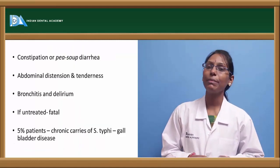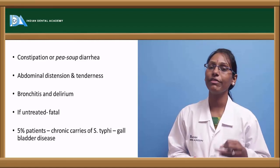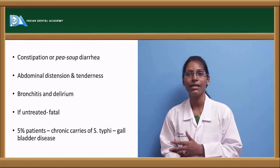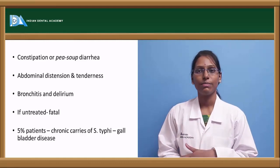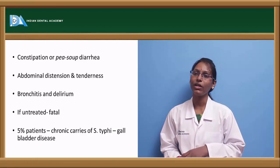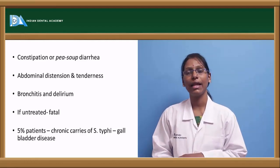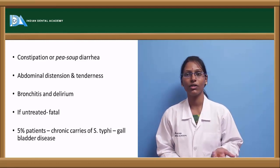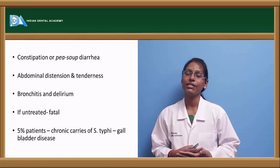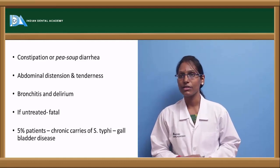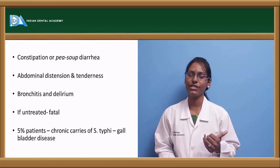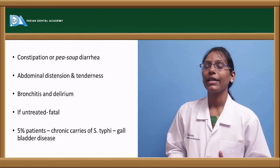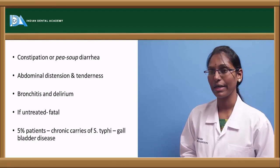If the patient is not identified with typhoid fever or if it is not treated properly within these two weeks, they may develop various severe complications such as hemorrhage of the Peyer's patches, perforation, arthritis and osteomyelitis if the bacilli enter bone, and if it involves the heart, myocarditis. In severe manifestations, meningitis can also occur, along with severe abdominal pain due to abdominal distension and severe cough leading to bronchitis.